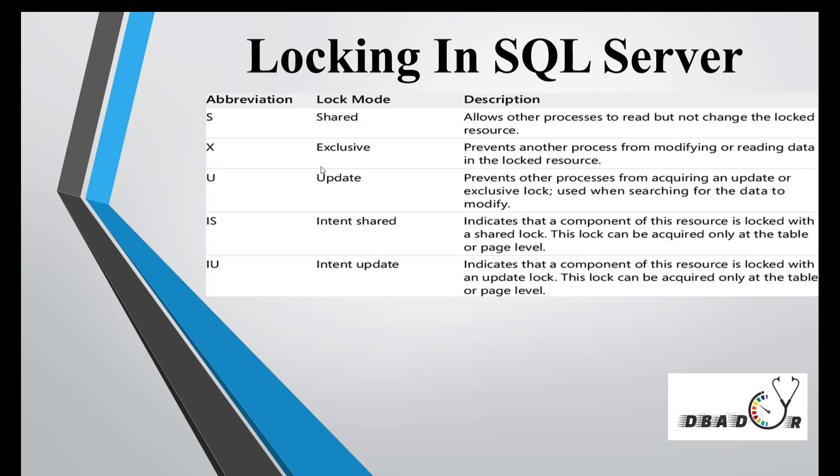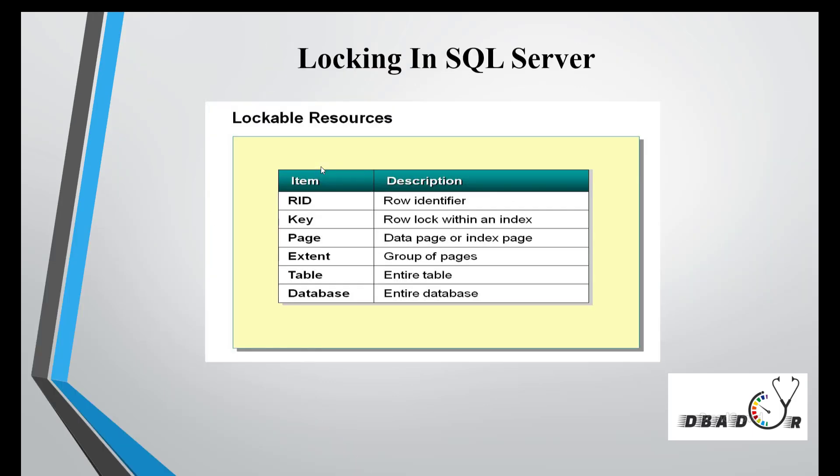Similarly, we have an update lock, which prevents updating anything on a particular table, column, or index. We also have intent locks — intent shared lock and intent update lock — which apply a lock to a particular table or database. We will see each one by one with a demonstration.